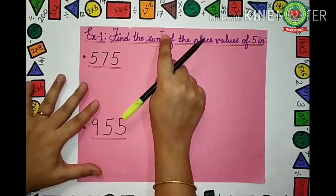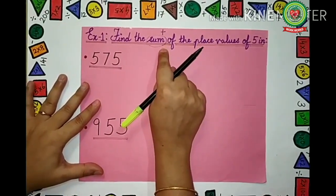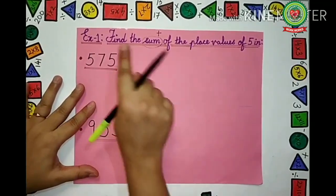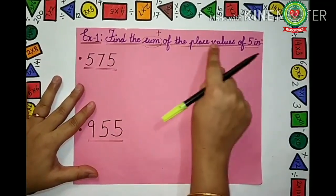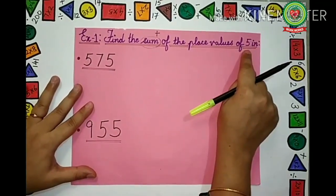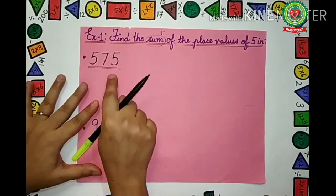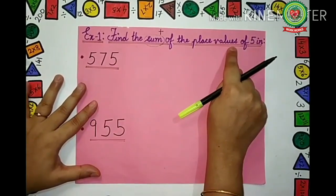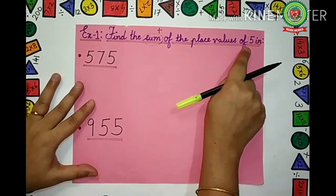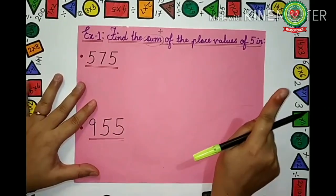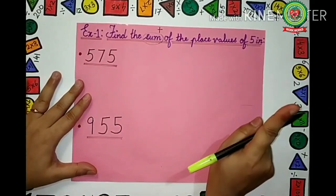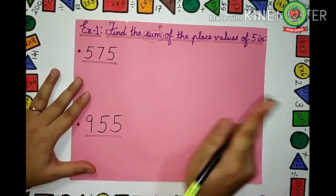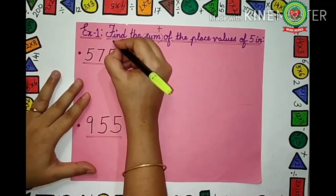That means we have to add — plus — the numbers. Again read the question: Find the sum of the place values of 5 in this number. First of all, we have to find out the place values of 5 in this number. For that, we have to write the place value table first.